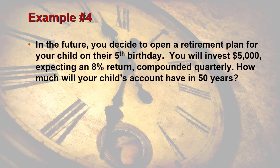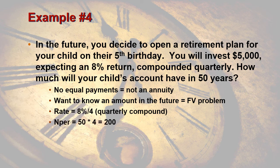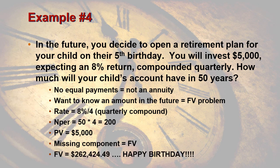Last example: in the future, you decide to open a retirement plan for your child on their fifth birthday. You invest $5,000 expecting an 8% return compounded quarterly. How much will your child's account have in 50 years? No equal payments — we're making one simple investment, so this is not an annuity problem. We want to know an amount in the future, so it must be a future value problem. We put in our components: 8% compounded quarterly means 2% per period. Since it's compounded quarterly over 50 years, we have 200 compounds. Our present value is $5,000, and our missing component is the future value. Investing $5,000 today and letting it sit for 50 years — happy birthday, because they will end up with $262,424.49.